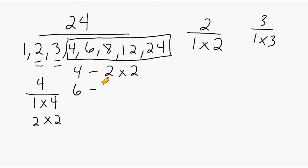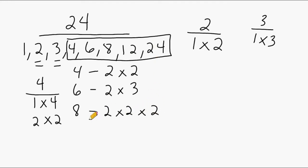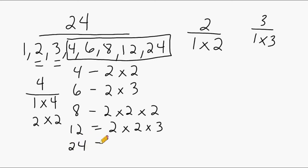To produce 6, we can multiply the prime numbers 2 and 3. To produce 8, we can multiply 2 times 2, which is 4, times 2, which is 8. To produce 12, we can multiply 2 times 2 times 3. And for the number 24, we can multiply 2 times 2, which is 4, times 2, which is 8, times 3, which is 24.